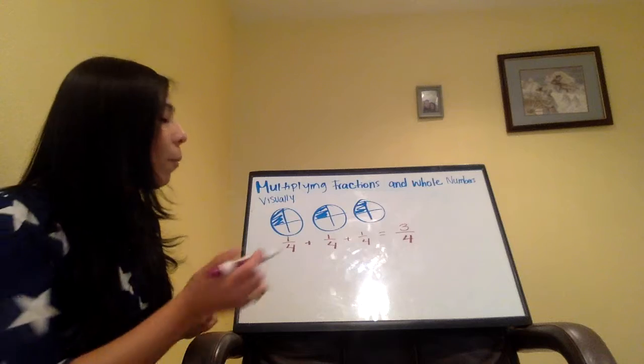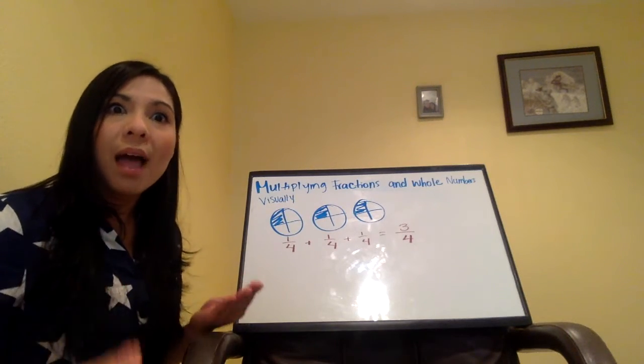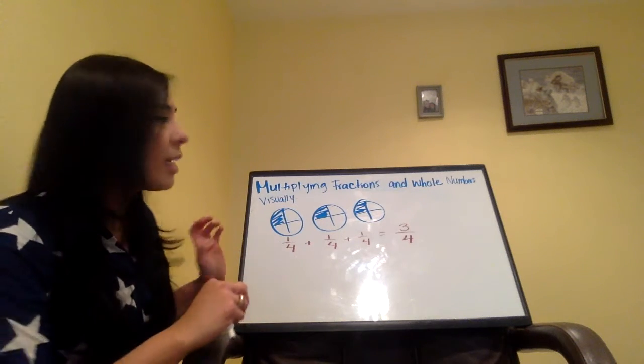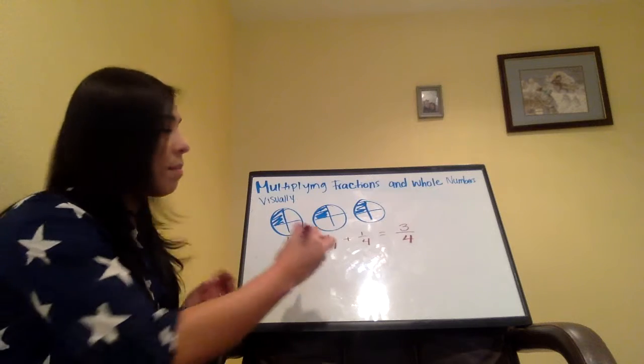I am going to do three-fourths, right? But how can I get three-fourths as a multiplication? That's pretty easy. So I'm going to do one, two, three because there are three of them.